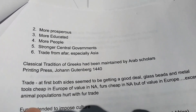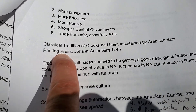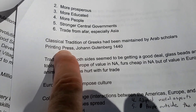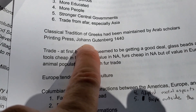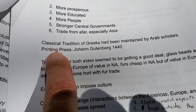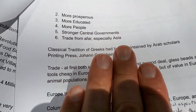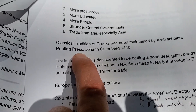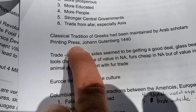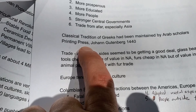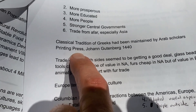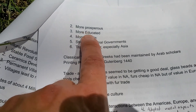The classical tradition of the Greeks had been maintained by Arab scholars during the medieval period. One of the biggest developments of this era was the printing press by Johann Gutenberg in 1440. Before it, very few books existed — mostly handwritten Bibles. With the metal typeset printing press, you could stamp the same page over and over, producing books at scale. This caused an explosion of information, comparable to the internet in our time — a simple invention that was a massive step toward a modern world.